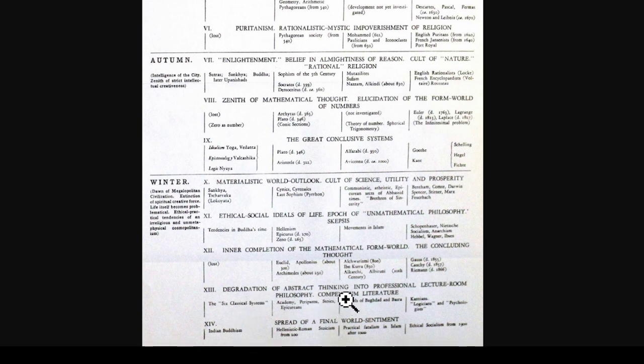For India's autumn phase, the great conclusive systems include idealism yoga, Vedanta, Vaisheshika for epistemology, and Nyaya for logic. Then the winter phase brings a materialistic world outlook — cult of science, utility, and prosperity — corresponding to our 19th-century shallow philosophers like Bentham, Darwin, and Spencer. Spengler has Sankhya appearing twice, which may be intentional with different connotations. Lokayata is a purely materialistic Indian thought system. This corresponds also to the Schools of Baghdad and Basra, and the six classical systems of Indian thought.